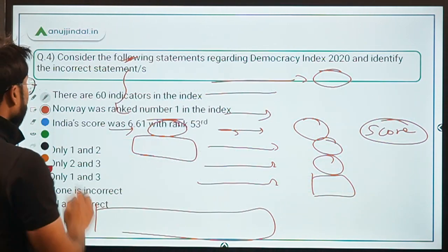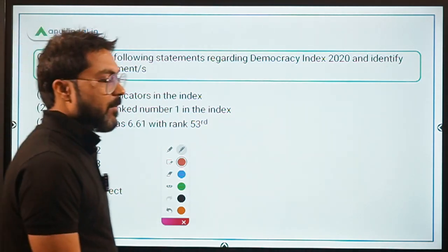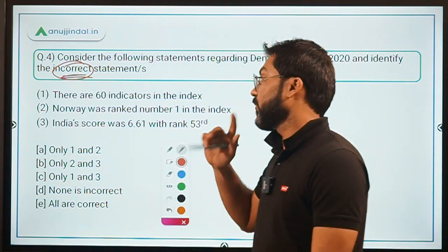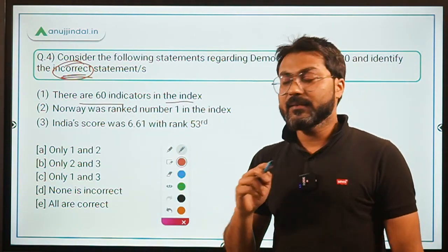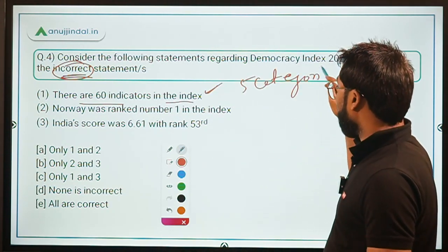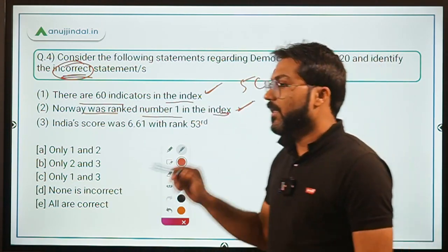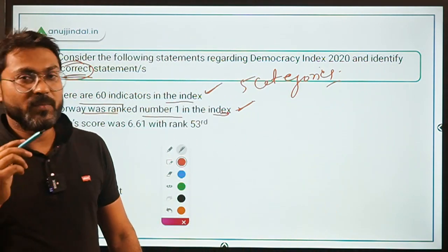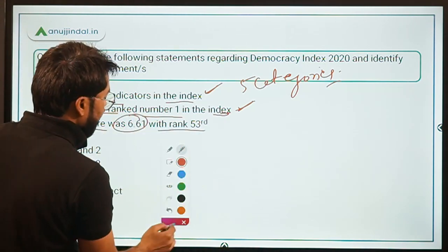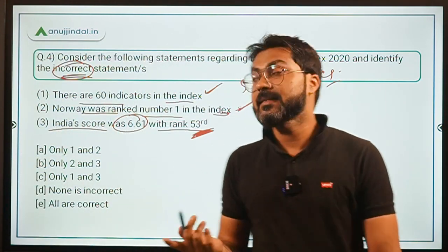Coming back to question 4, you have to identify the incorrect statements. Statement: there are 60 indicators in the index — correct. Norway is ranked number 1 — correct. Iceland is number 2, Sweden number 3, India 53rd — correct. India's score was 6.61 with rank 53rd — absolutely correct.